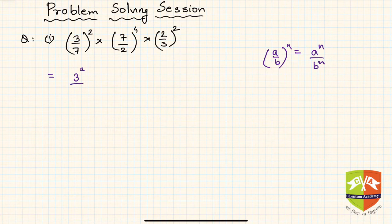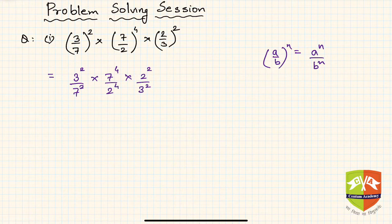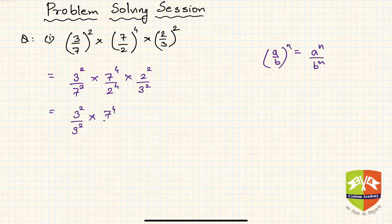Continuing, the last term gives us 2² / 3². Now let me rewrite all the bases together, so it becomes (3² / 3²) × (7⁴ / 7²) × (2² / 2⁴).